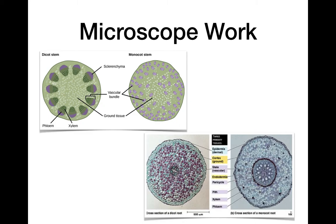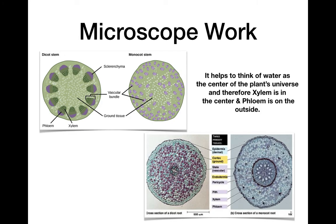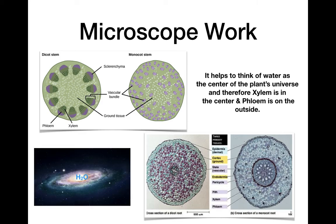The next task is to analyze microscope images — that's the key skill for this lesson. You'll see microscope pictures and you need to identify different vascular tissues: the vascular bundles, the xylem, and the phloem. It's also good to know the ground tissue that surrounds those bundles. A helpful analogy: xylem is the center of the plant's universe because water is the center, so xylem is in the center and phloem is on the outside.